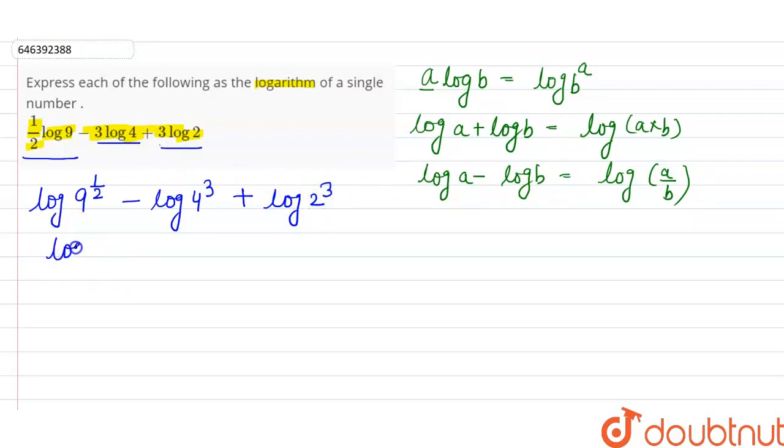Now, we will solve this. 9 to the power 1 by 2. Right? 9 raised to the power 1 by 2 means square root of 9, which is equal to 3. Minus log. Now 4 cube is 4 into 4, 16 into 4, 64. Right? Plus log 2 cube is 8.